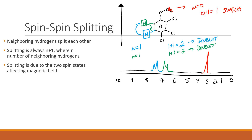The key point about spin-spin splitting: the splitting pattern - whether singlets, doublets, triplets, or quartets - tells us how many hydrogens are next door, based on the n+1 rule where n equals the number of neighboring hydrogens.